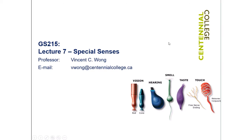In lecture 7 we are going to be looking at special senses. We are going to be looking at different types of sensory receptors that are located in various sensory organs. We will be having an emphasis on the eyes as well as the ears, but we will look at some of the other senses briefly as well.